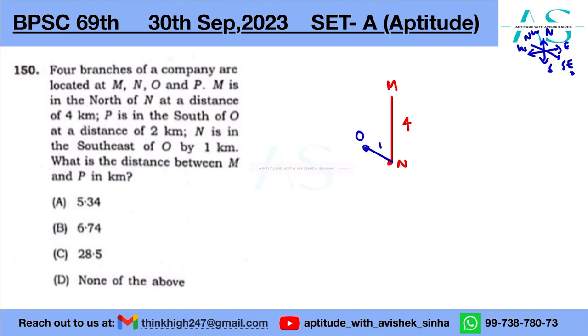Now P is in the south of O at a distance of two. So here we have P and this distance as a whole is two kilometers. Now what is the distance between M and P in kilometers?